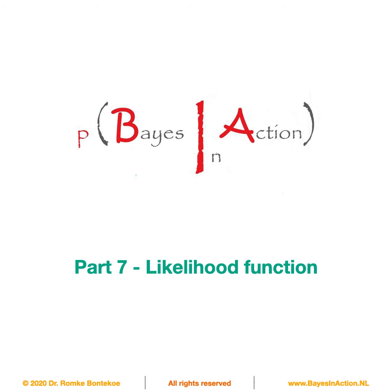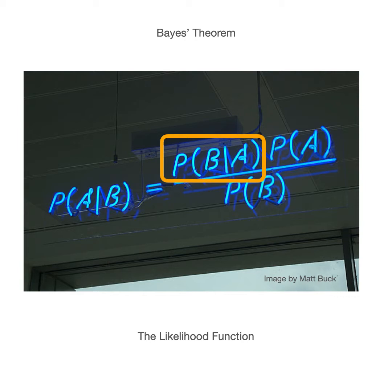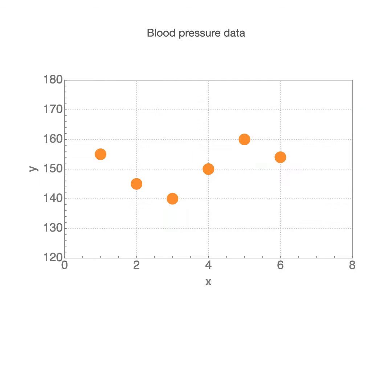Welcome to part 7 of Bayes in action. In this part we will cover the likelihood function. We are slowly getting closer to our goal, namely explaining Bayes theorem and using it for data regression. The likelihood function is actually one of the four factors in Bayes theorem. We cover this in this part.